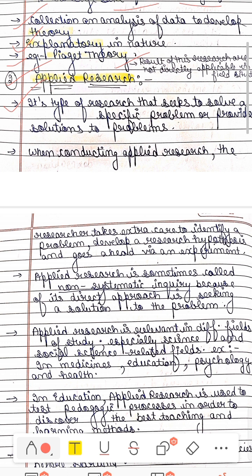This is the research that seeks to solve a specific problem or provide solution to the problem. Simple solution to the problem, apply it. When you do applied research, what does the researcher do? He gives extra attention to identify the problem, then he makes hypotheses, and then he concludes through the experiment, that he actually applied and looked at it.